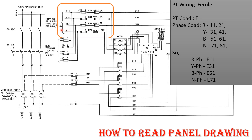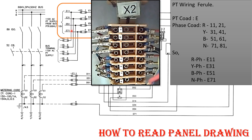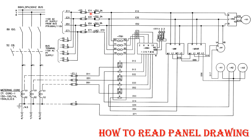You can see E11, E31, E51, and E71 — these are the cables coming from the PT outside in the switchyard into the control panel in the control room. Next, these go to terminal block X2. On X2.1 you have E11, X2.2 is E31, X2.3 is E51, and X2.4 is E71. From here, they are connected to fuse links.